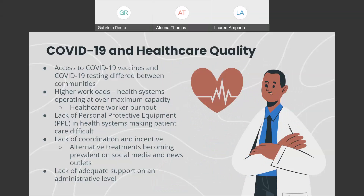Healthcare quality during COVID-19 varied greatly. Depending on the community you resided in, access to COVID-19 testing and vaccines differed. Younger people more experienced with technology were able to navigate websites to get their vaccines, while older people, or people without internet access, or people with lowered health literacy, were not able to do so. Another factor relating to healthcare quality is that of higher workloads. Since COVID cases were pouring into hospitals, many workers were experiencing symptoms of burnout. Healthcare workers constantly put themselves on the front lines at the cost of their mental and physical health. Healthcare quality was also affected by the disconnect between administration and frontline workers.